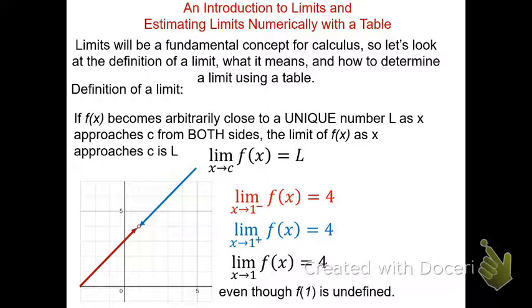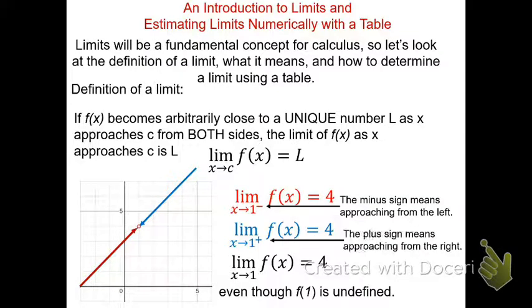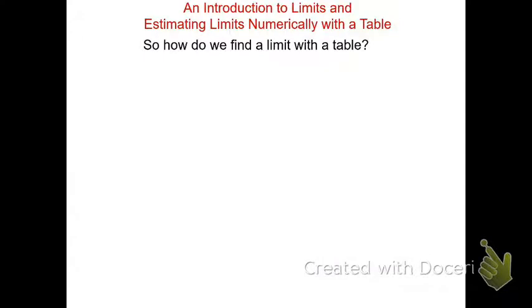Now let's see what this looks like in a table. Keep in mind the minus sign and plus sign in the notation — the minus sign means we're approaching from the left, since that's where the negatives are on a graph, and the positive means approaching from the right. How do we find a limit using a table?